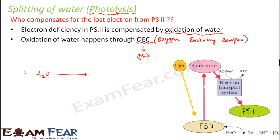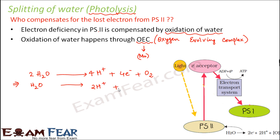Water breaks down to form hydrogen ions, electrons, and oxygen. We can write this equation as: H₂O → 2H⁺ + 2e⁻ + ½O₂. This oxidation of water occurs because of the presence of the OEC — the manganese complex or protein structure.